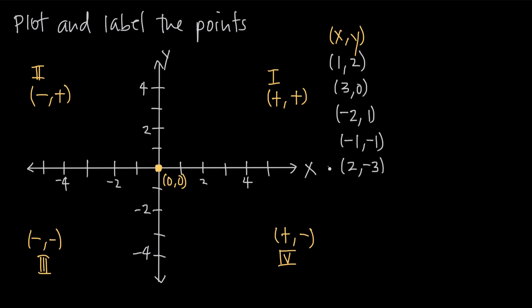Let's go ahead and plot a few points. We have the point (1, 2) — that means x is positive 1 and y is positive 2. We start at the origin and come out to a distance of 1 along the x-axis in the positive direction. Then from that point, we go up two units in the positive direction of the y-axis. So we come out to positive 1, then straight up to positive 2, and plot the point — this is (1, 2).